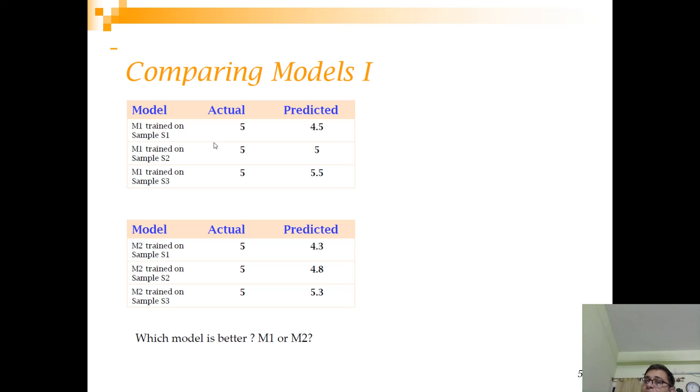For sake of simplicity we are assuming that the testing set has only one record which has actual value of 5. So when I build M1 on S1 I get a prediction of 4.5, when we train on S2 I get a value of 5.5, when I train on S3 I get a value of 5.5, and when I am doing that same thing for M2 I get a prediction of 4.3, 4.8 and 5.3 respectively. Now a question is which model do you think is better, is it M1 or M2?